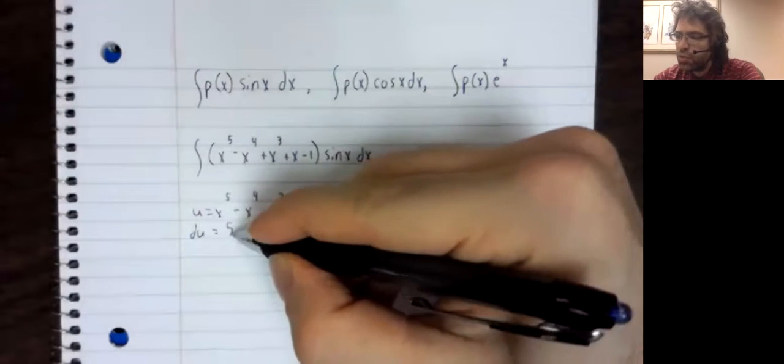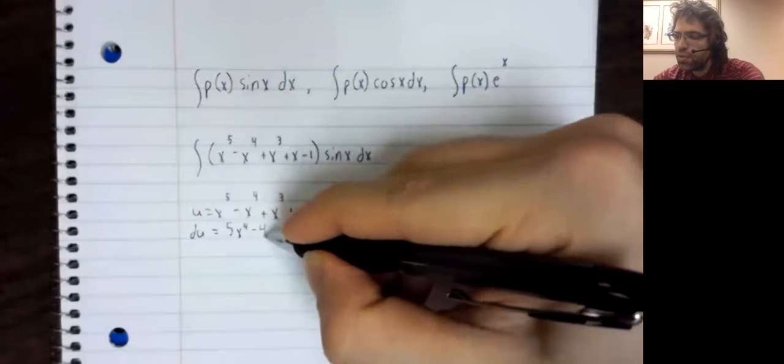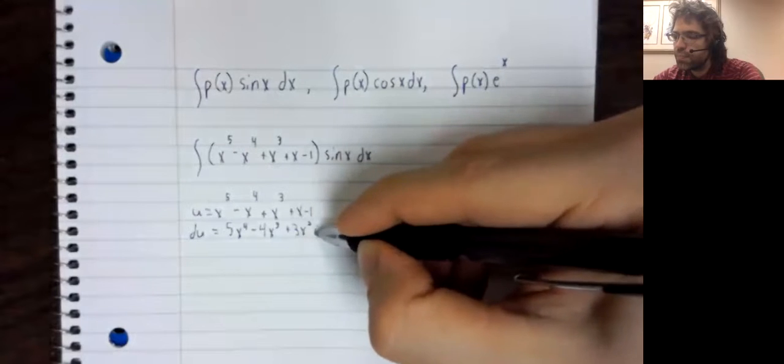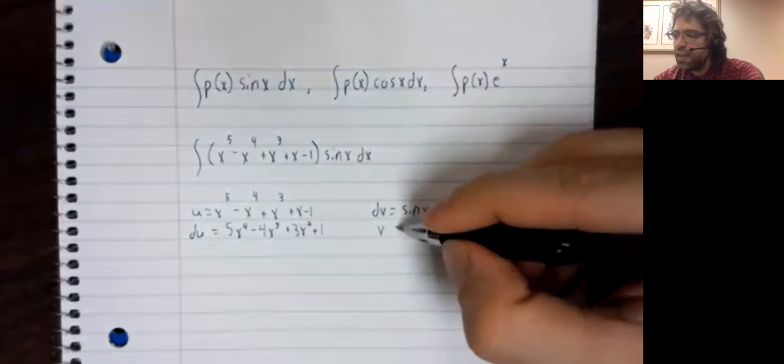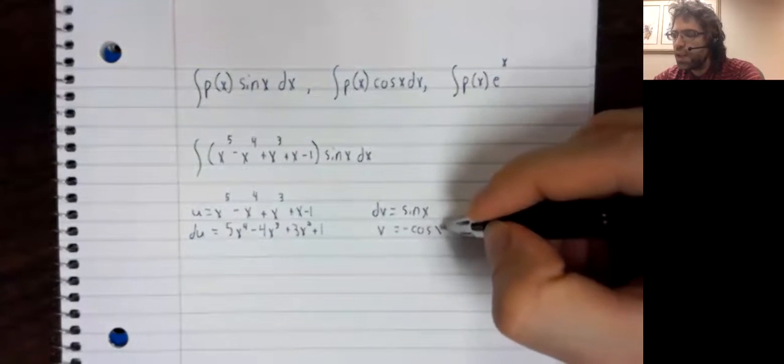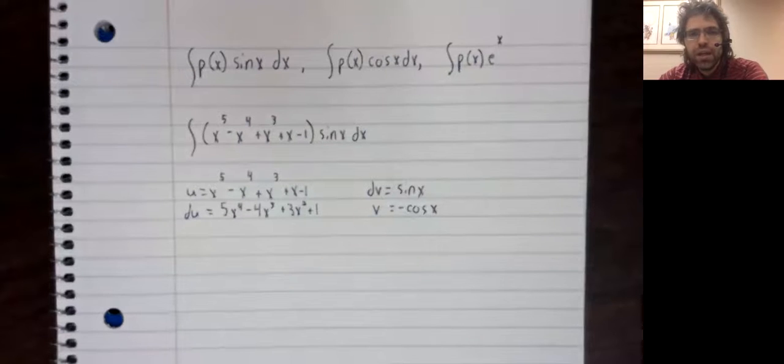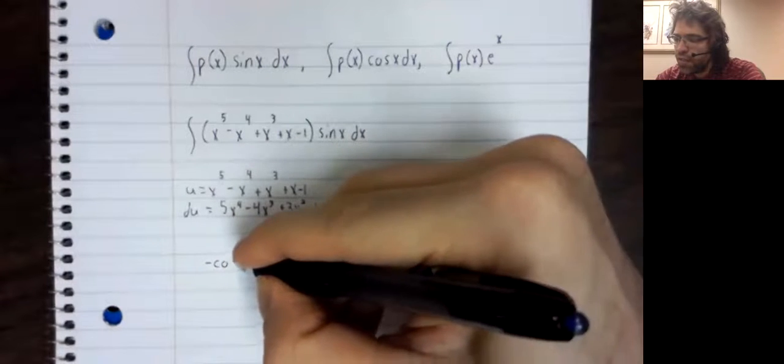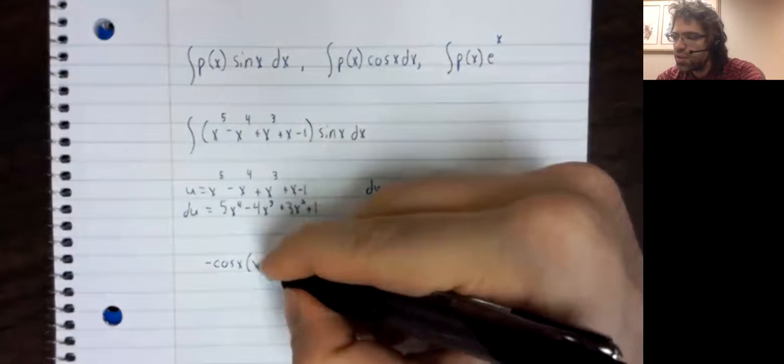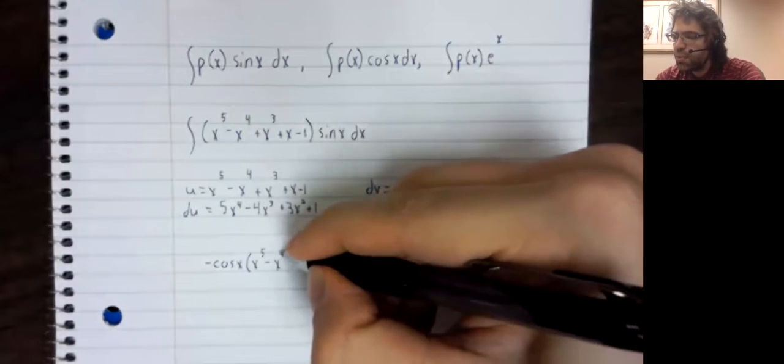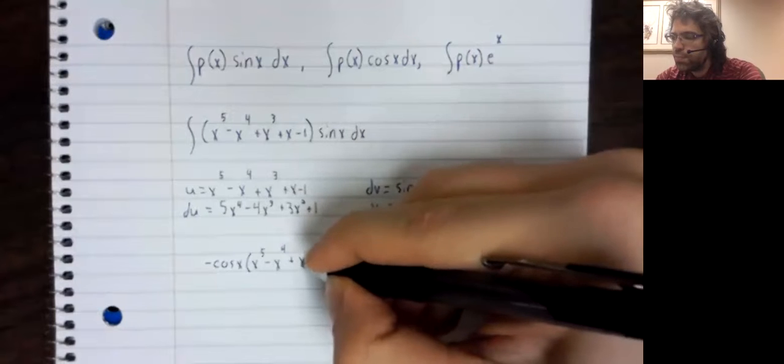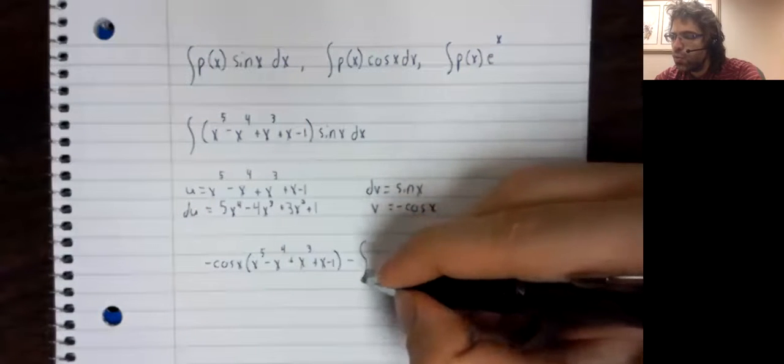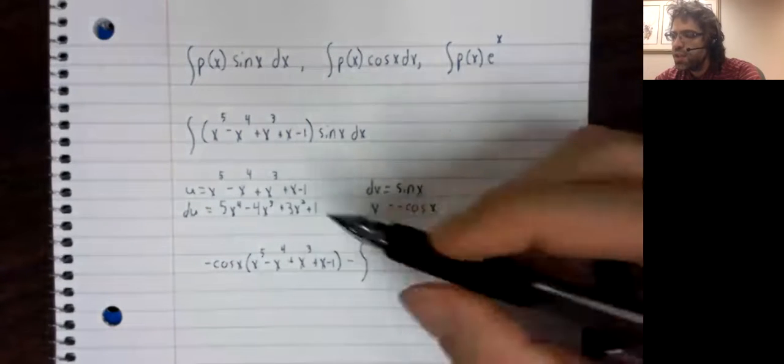You compute du without difficulty, and you compute v also without difficulty. And integration by parts says you should take uv, so the negative cosine of x times this polynomial minus the integral of v du.